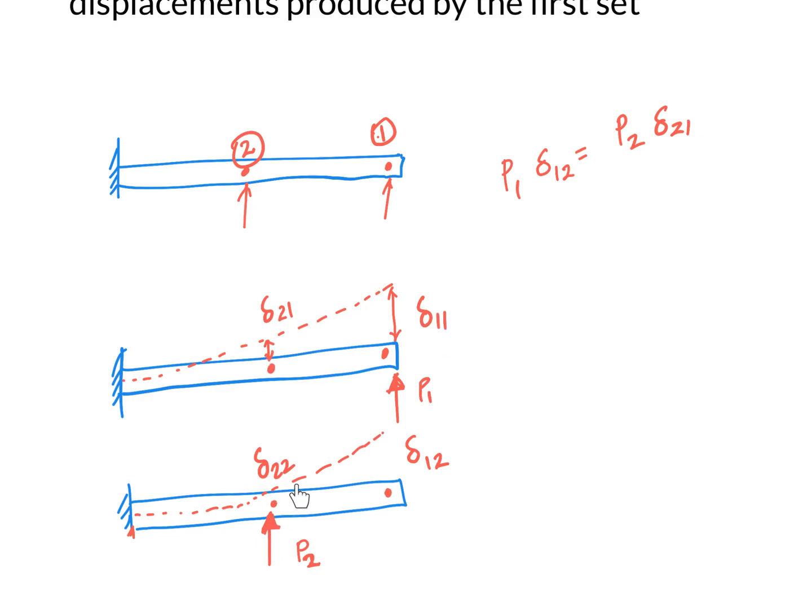So the first set of loads generate displacements, and the second set of loads generates a displacement like this. So the displacements at this point is delta 1 2, it is displacement at point 1 due to the second load pair, while delta 1 1 is a displacement at node 1 due to load set 1. So what does Maxwell-Betty theorem say? The work done by this force through the displacements caused by the second loads is equal to the work done by the second load set working through the displacements produced by the first load set. I hope with this example it is clear. But you may be asking how this helped to prove that the stiffness matrix is symmetric.